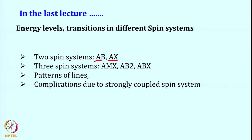Then we moved ahead and looked at the three spin system — the AMX system where all three spins are weakly coupled — or the ABX system, where AB will be strongly coupled and they are weakly coupled with X. Looking at that, we went ahead and looked at the patterns of lines. For a strongly coupled system, the line depends upon the factor sine theta, which changes the patterns and the intensity of the line. We also looked at the splitting pattern and complications that could arise because of a strongly coupled spin system.